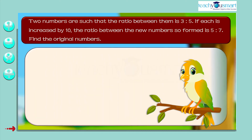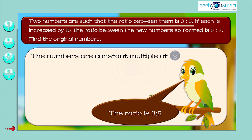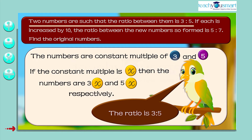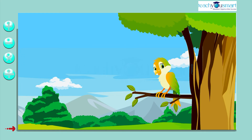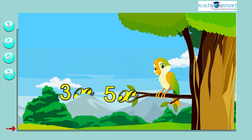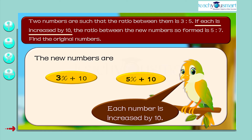Given that the ratio between the numbers is 3 is to 5, the numbers are a constant multiple of 3 and 5. If the constant multiple is x, then the numbers are 3x and 5x respectively. If each number is increased by 10, then the new numbers are 3x plus 10 and 5x plus 10.